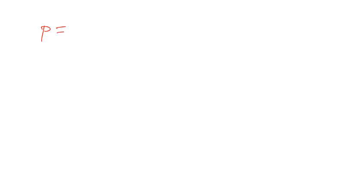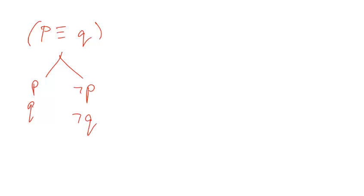I had some questions about some of the tree rules, so let's talk about those. Specifically the question was about the biconditional tree rule — why does it look the way it does? Remember our truth table for the biconditional: P if and only if Q is true in the first case or the fourth case.